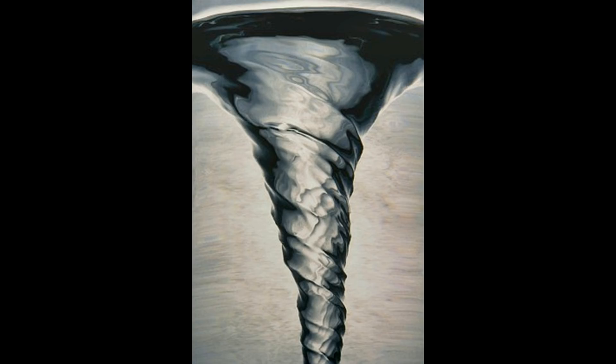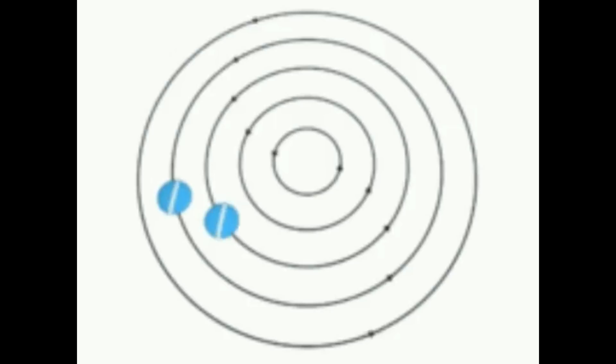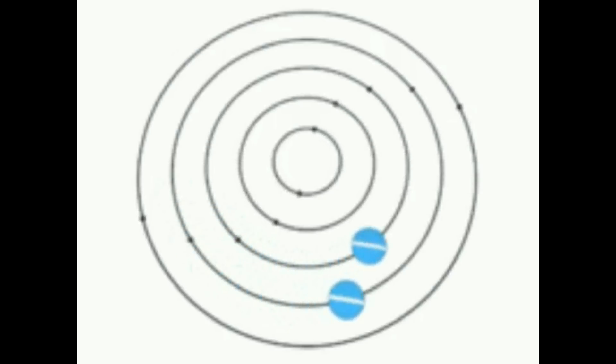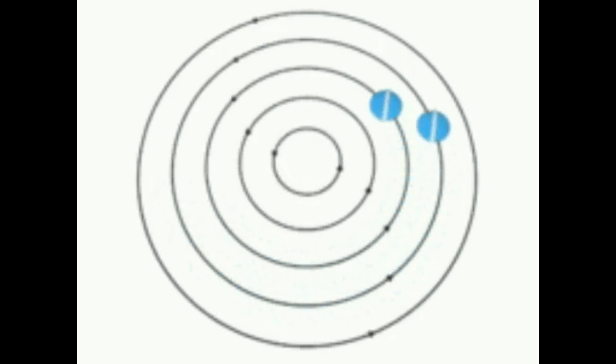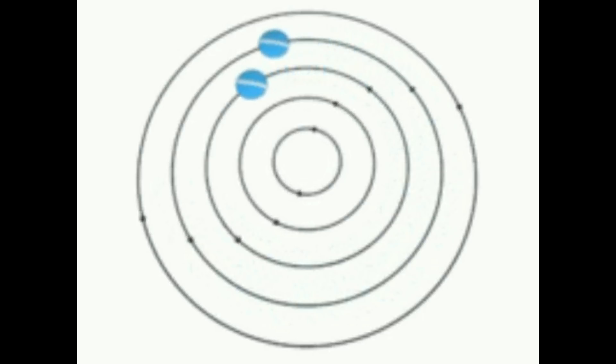Once formed, vortices can move, stretch, twist, and interact in complex ways. A moving vortex carries with it some angular and linear momentum, energy, and mass.